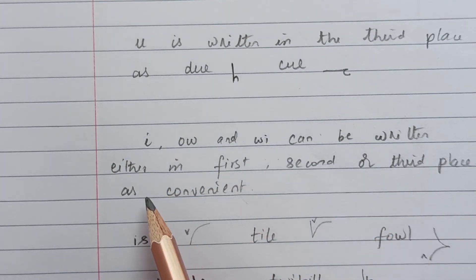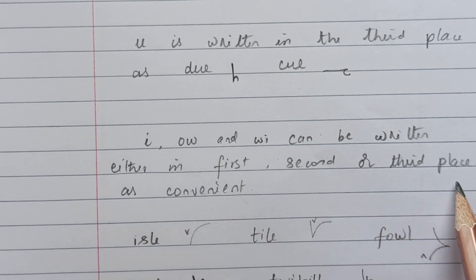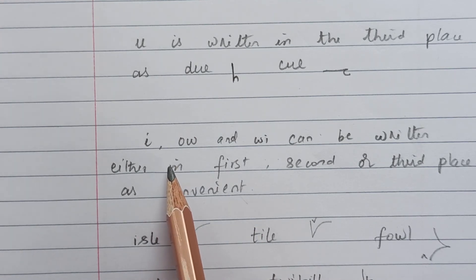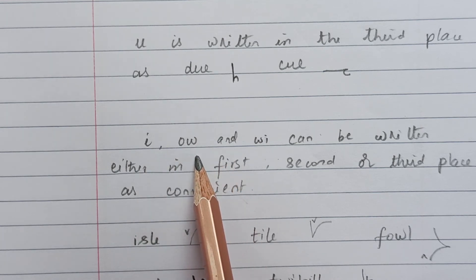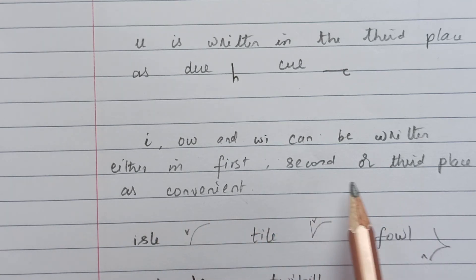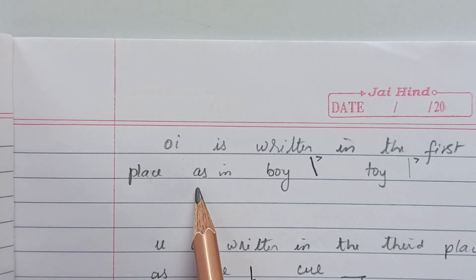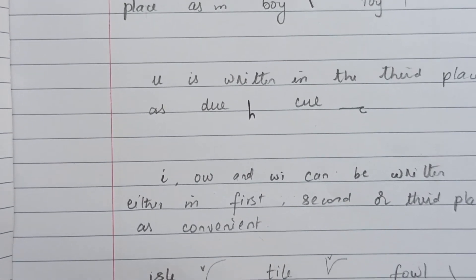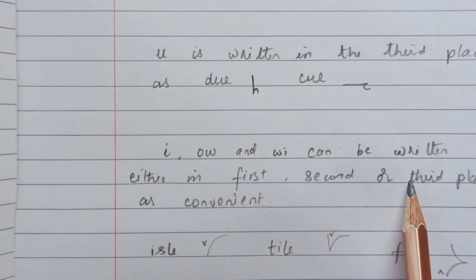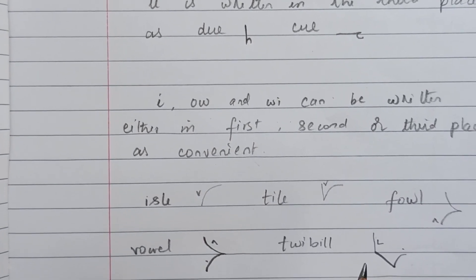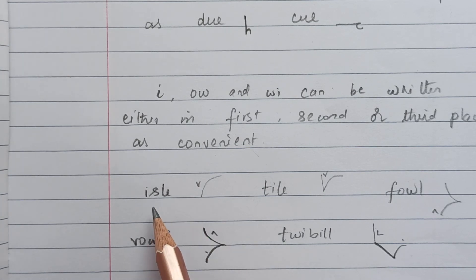I can be written in the third place as convenient to us. The diphthong Y can be written either in the first, second, or third place, whereas I has to be written in the third place, and U is to be written in the third place as convenient to us.